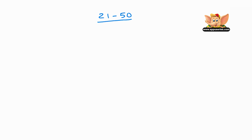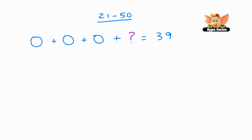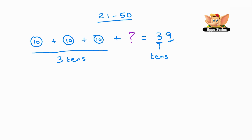Let's see if you can guess this one. We have three circles, just like before, plus a question mark equals 39. So we have to figure out the question mark. In 39, we have three 10s and nine 1s. So how many do we need to make 39? If you said nine 1s, you were right.